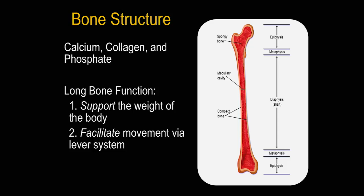Starting off with bone structure, a bone itself is comprised of calcium, collagen, and phosphate. There are no exact percentages in terms of how a bone is broken down between those three elements because bone is constantly absorbing and reabsorbing through osteoclasts and osteoblasts, which we'll talk about as well.